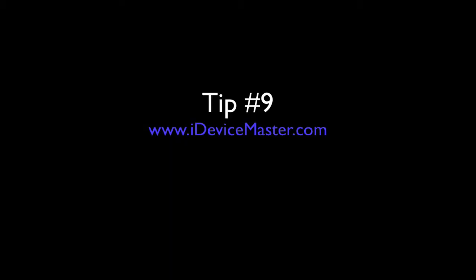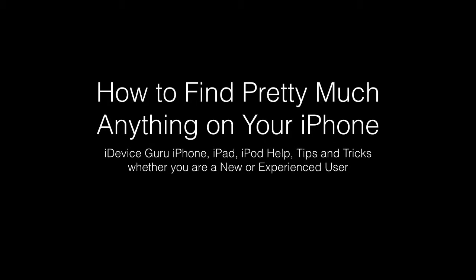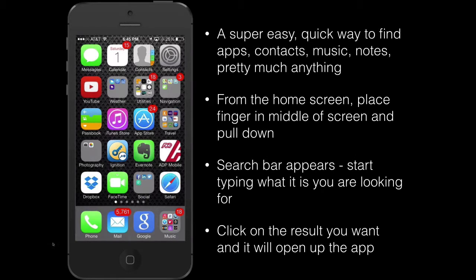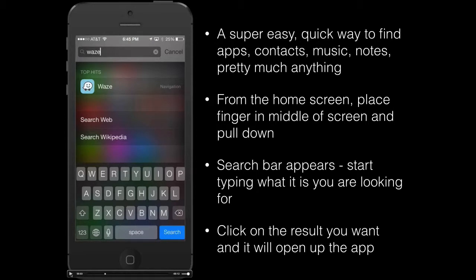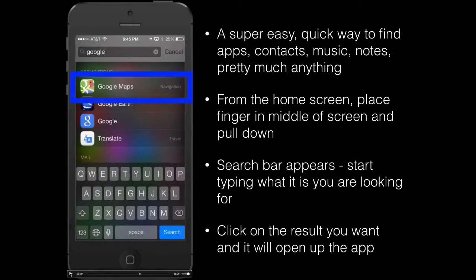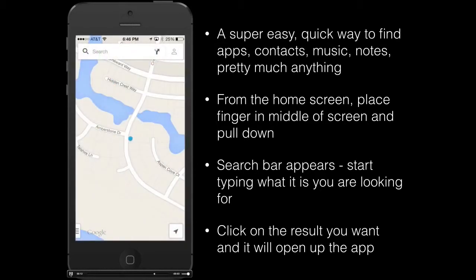Tip number nine: I'm going to show you how to find pretty much anything on your iPhone. With iOS 7, Apple introduced a much simpler method using the Spotlight Search function. Place your finger in the middle of the screen and pull downwards — a search bar will appear where you can type pretty much anything: apps, contacts, music, notes. Start typing what you're looking for and it will come up with suggestions. For example, searching 'Google Maps' will show it right at the top of the list, and selecting it takes you straight to the app.